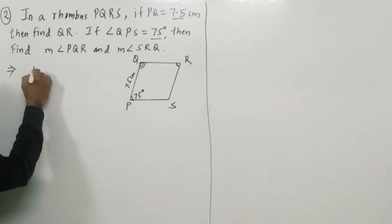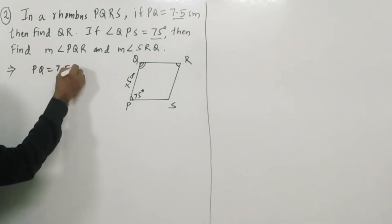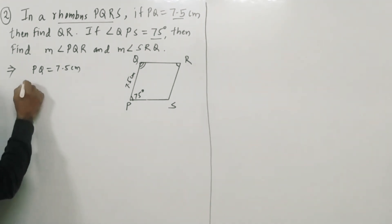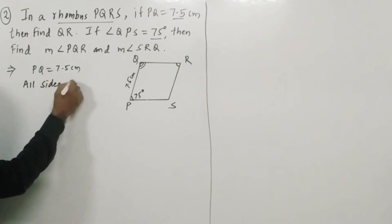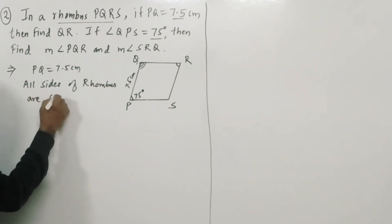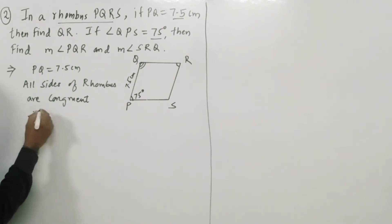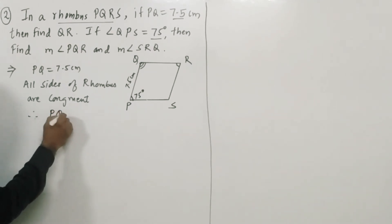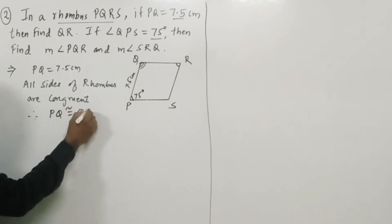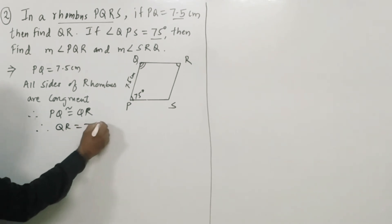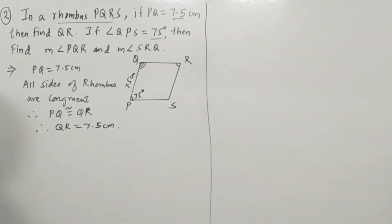PQ is given as 7.5cm. By property, all sides of a rhombus are congruent, therefore length PQ is congruent to length QR. So QR is also 7.5cm.